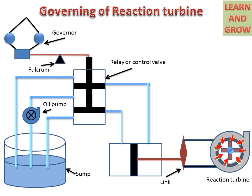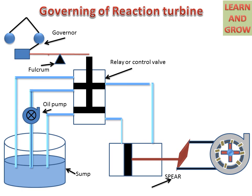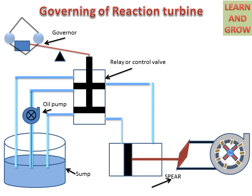Now we see the working of the governing of the reaction turbine. When water enters through the guide vanes and goes to the rotor, the rotor starts rotating. If the load is less, the speed of the rotor will be high. This rotor or turbine is connected to the governor through a linkage mechanism, so the governor rotates at higher speed. Due to the higher speed of the governor, the sleeve will move in the upward direction, pulling the lever and pushing the piston in the downward direction.